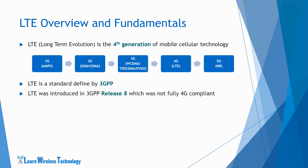LTE was introduced in Release 8. Any mobile wireless technology is given a release name such as Release 8, Release 9, Release 10, as the technology development progresses and keeps meeting the requirements at different stages. Before Release 8, when there was 3G technology, it was named Release 99 to Release 7. Release 99 was UMTS, and as it evolved it was called HSDPA, HSUPA, and HSPA+ at various stages of evolution.